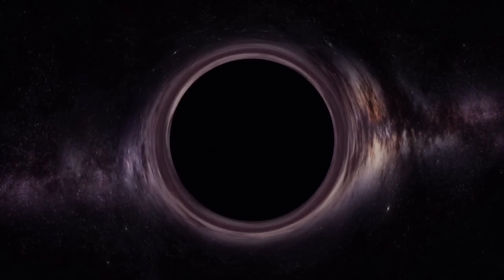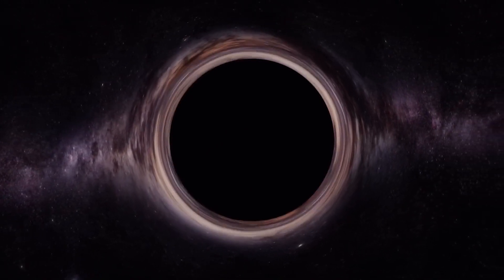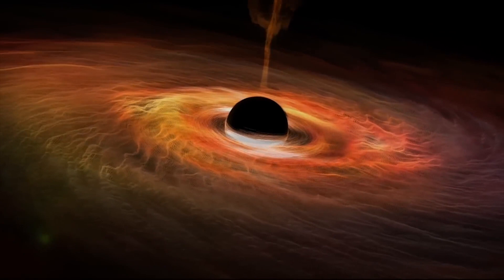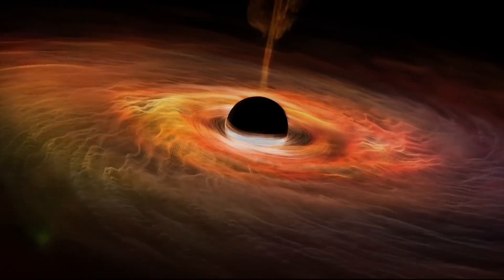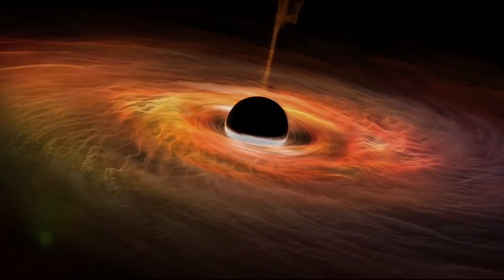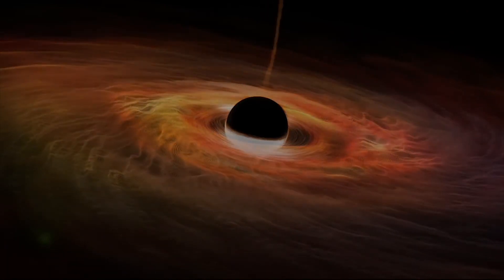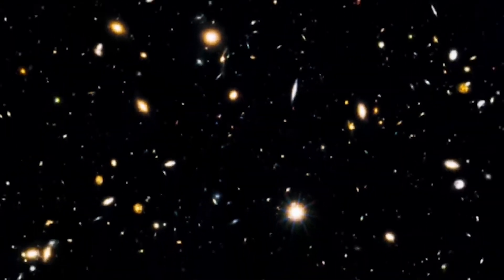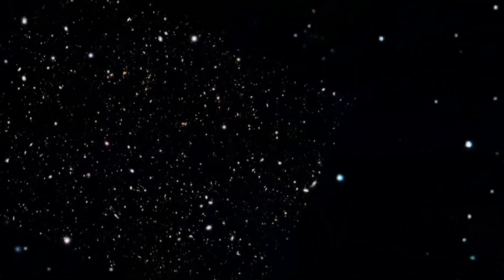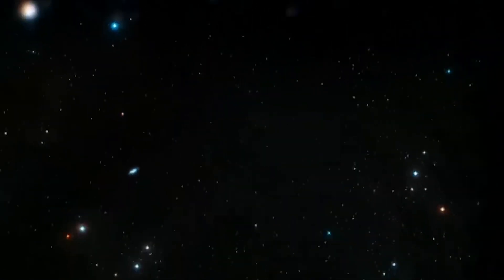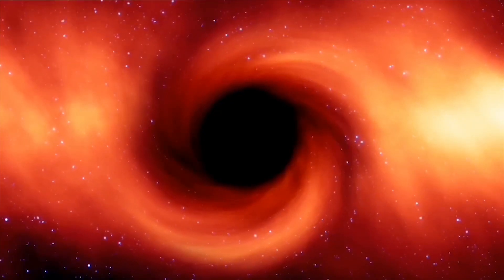Another technique employed to study distant black holes like TON 618 is gravitational lensing. Gravitational lensing occurs when the immense gravitational pull of a massive object, such as TON 618, bends the path of light passing near it. This bending effect can act as a natural lens, magnifying and distorting the light from more distant objects behind it.